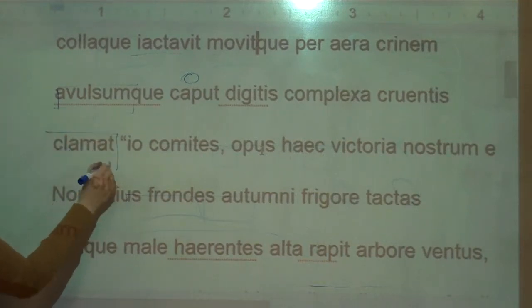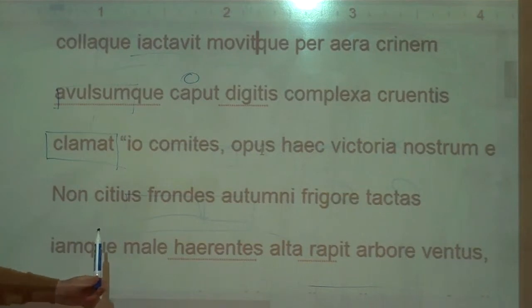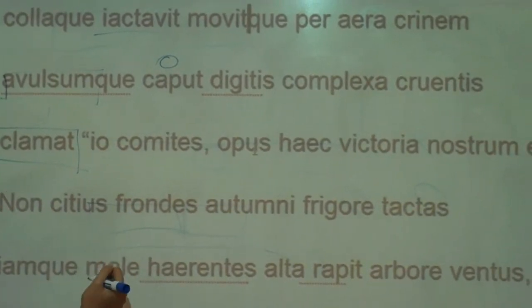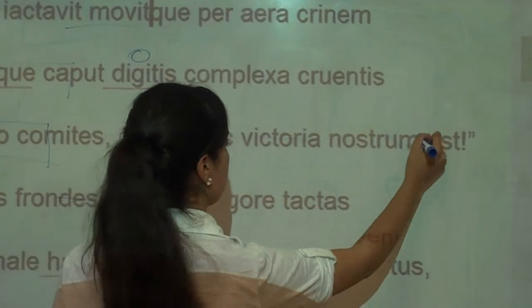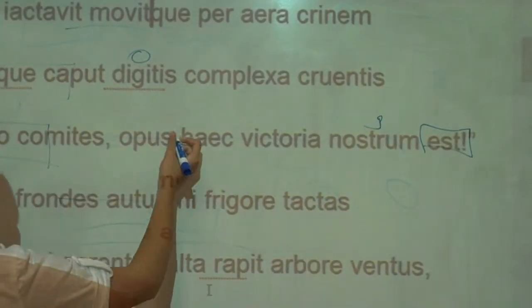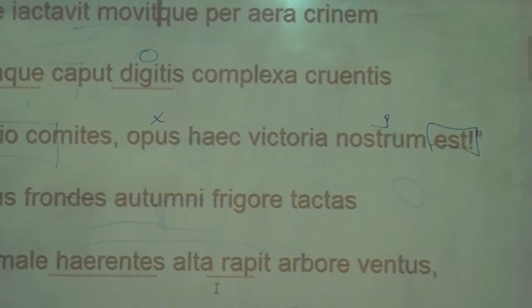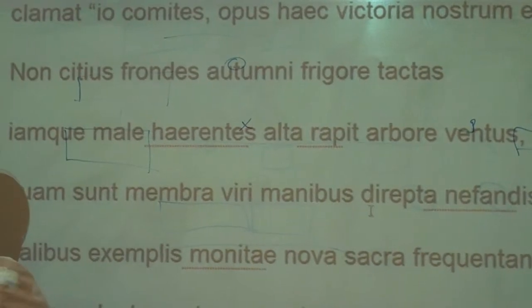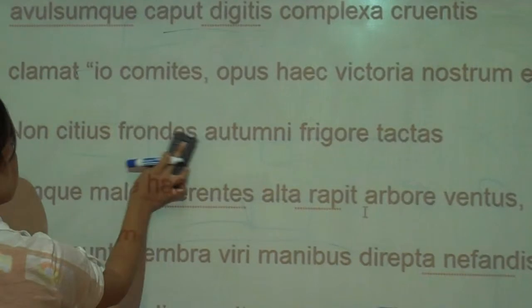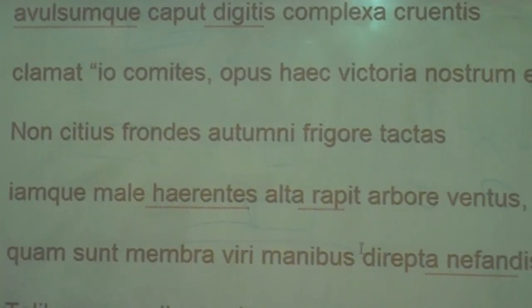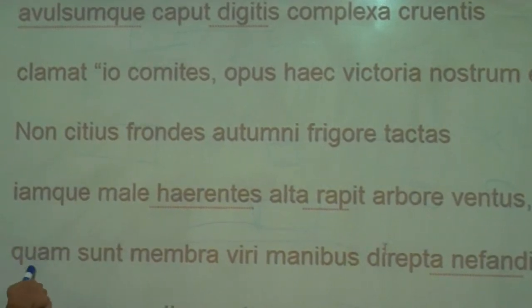And then she shouts. What does she shout? She says 'Io comites, opus haec victoria nostrum' - 'Ho comrades, this work is our victory.' And then here, he compares. He makes it in reference. Okay, so now more quickly, and he's comparing it to this then this later.